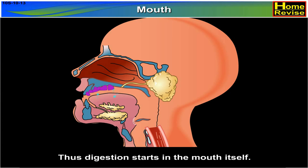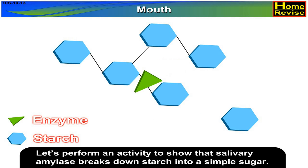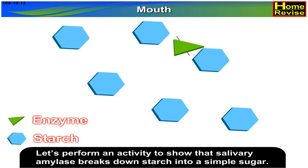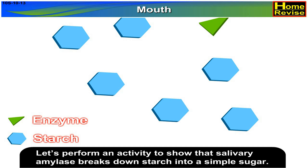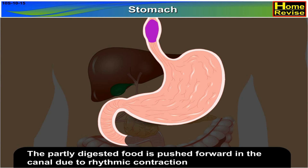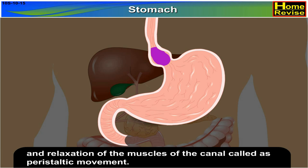Thus, digestion starts in the mouth itself. The partly digested food is pushed forward in the canal due to rhythmic contraction and relaxation of the muscles of the canal, called peristaltic movement.